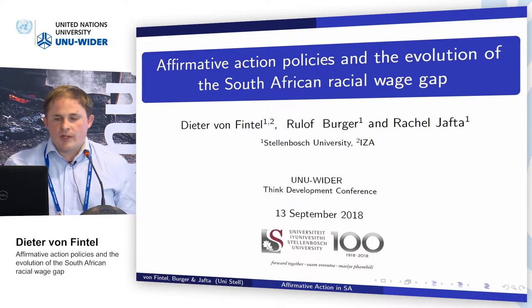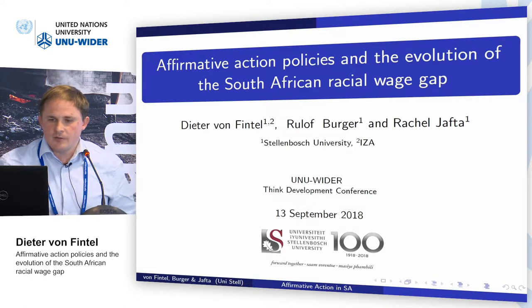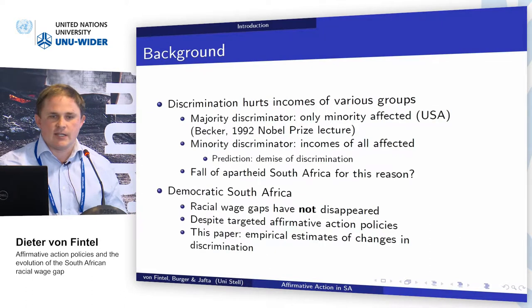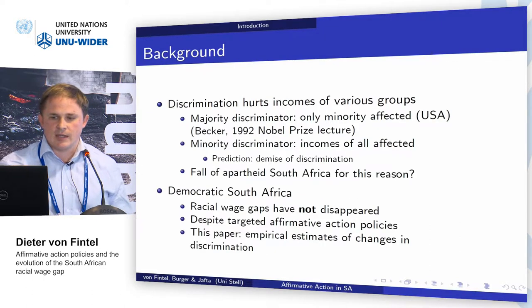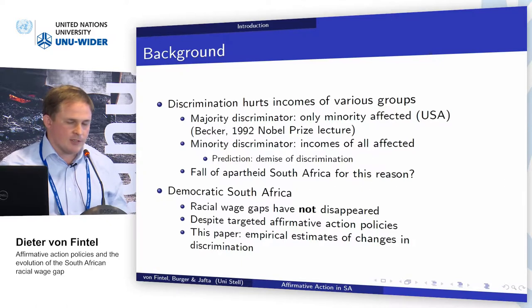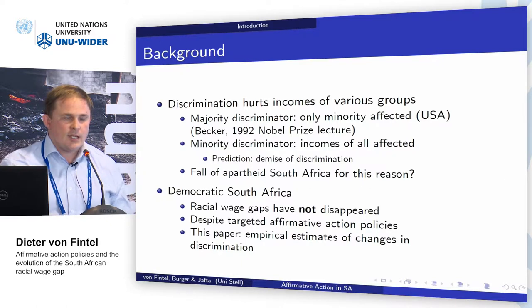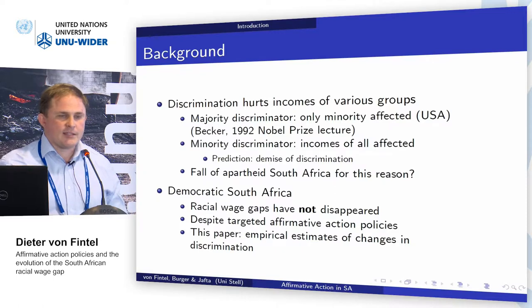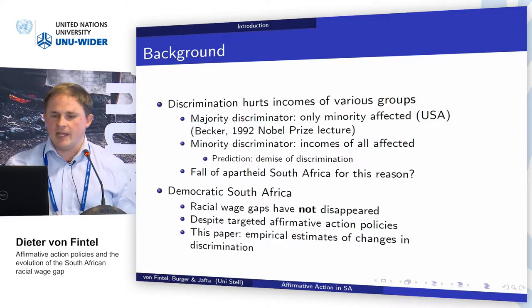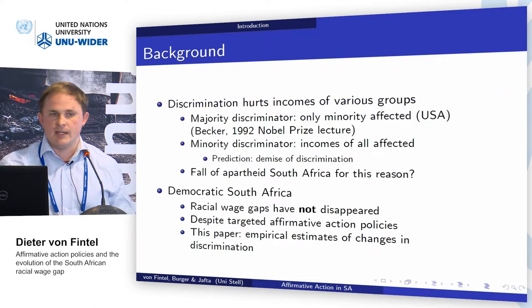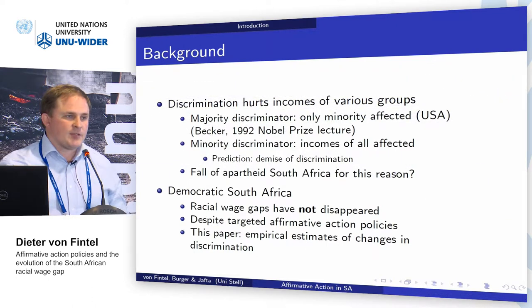We know that discrimination hurts incomes of various groups. If the majority discriminates against the minority, such as in the USA, then it's typically the minority whose incomes are affected. But in the case of South Africa, where a minority — particularly the white population — discriminated against the black African population, all incomes are affected.